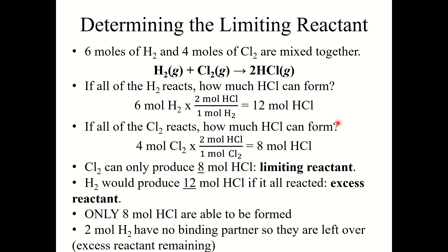Let's look at this more mathematically. Say that six moles of H2 and four moles of Cl2 are mixed together. When you're given problems where the numbers aren't simple, the easiest way to solve them is to take all of your reactants and convert them to the same product, then compare how much product each can make. If all of the H2 reacts and we assume excess Cl2, those six moles of H2 can form 12 moles of HCl, calculated using the coefficients from the balanced chemical equation as our conversion factor.